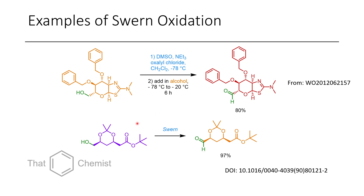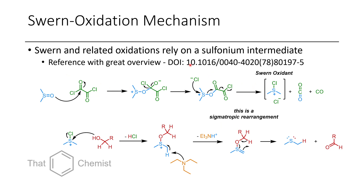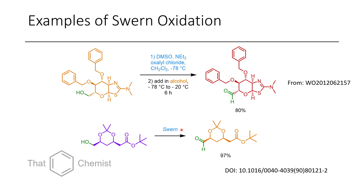Another example of a Swern oxidation is the conversion of an acetonide-protected hydroxy ester, which undergoes a Swern oxidation affording the aldehyde. Most of the time in the literature when you see Swern oxidation listed, it's this exact set of conditions — this is usually what works best. Sometimes people deviate from it, but most of the time it works so consistently that people just call it the Swern oxidation because it works almost every time.